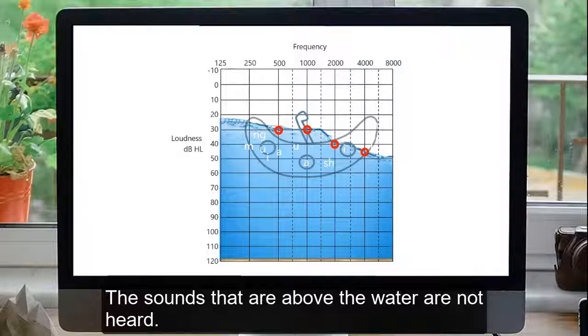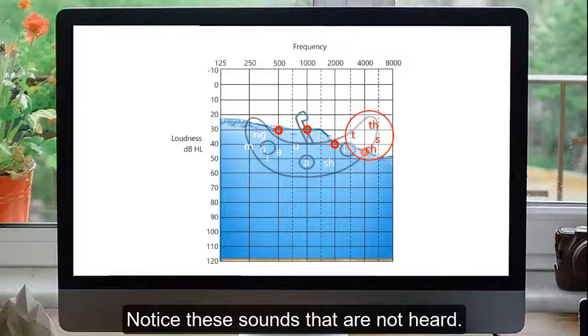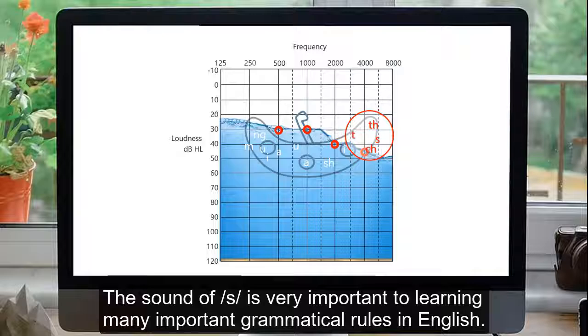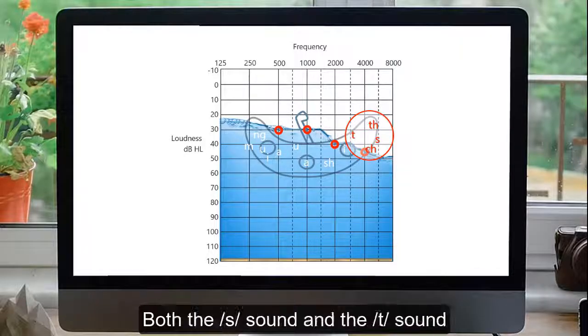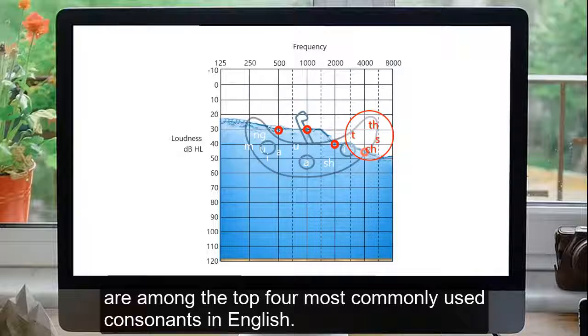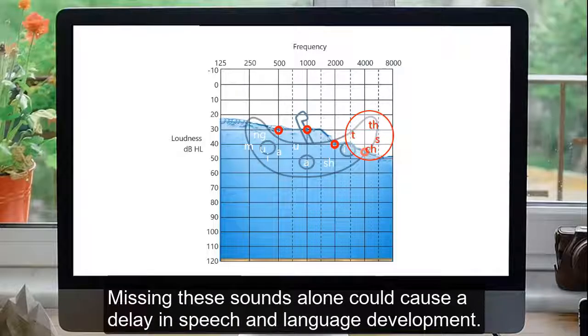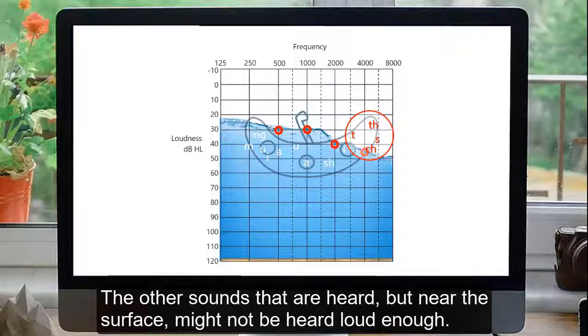The sounds that are above the water are not heard. Notice these sounds that are not heard. The sound of S is very important to learning many important grammatical rules in English. Book versus books, for example. Both the S sound and the T sound are among the top four most commonly used consonants in English. Missing these sounds alone could cause a delay in speech and language development. The other sounds that are heard, but near the surface, might not be heard loud enough.